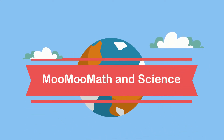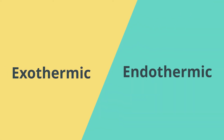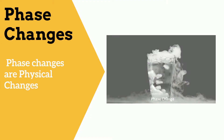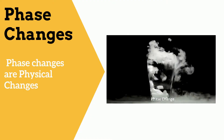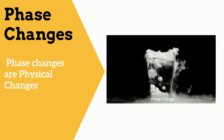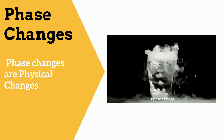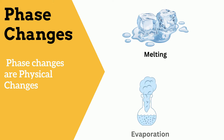Welcome to Moo Moo Math and Science and Endothermic and Exothermic Phase Changes. Phase changes are physical changes that occur when a substance changes from one state of matter to another, such as a solid to a liquid or a liquid to a gas.